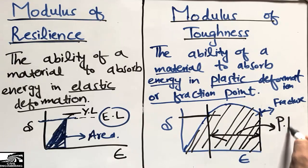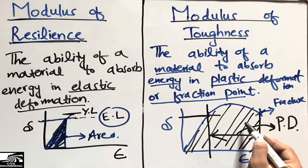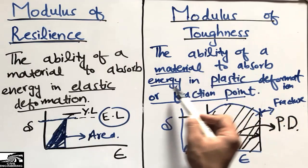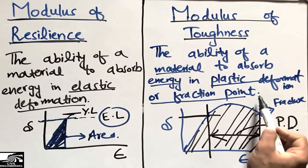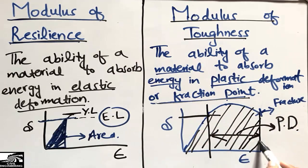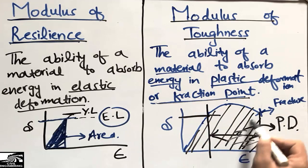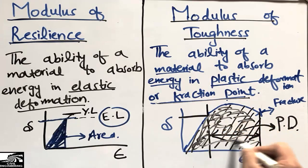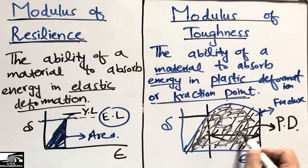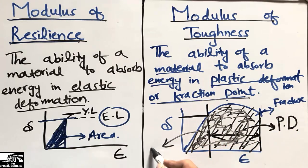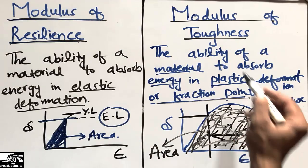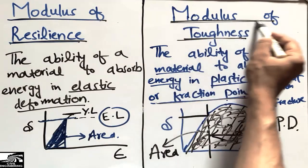After the elastic limit we enter the plastic deformation zone. The modulus of toughness is the ability of a material to absorb energy in plastic deformation or up to the fracture point. The total area under the stress-strain curve up to fracture represents the energy stored, and we call this property the modulus of toughness.